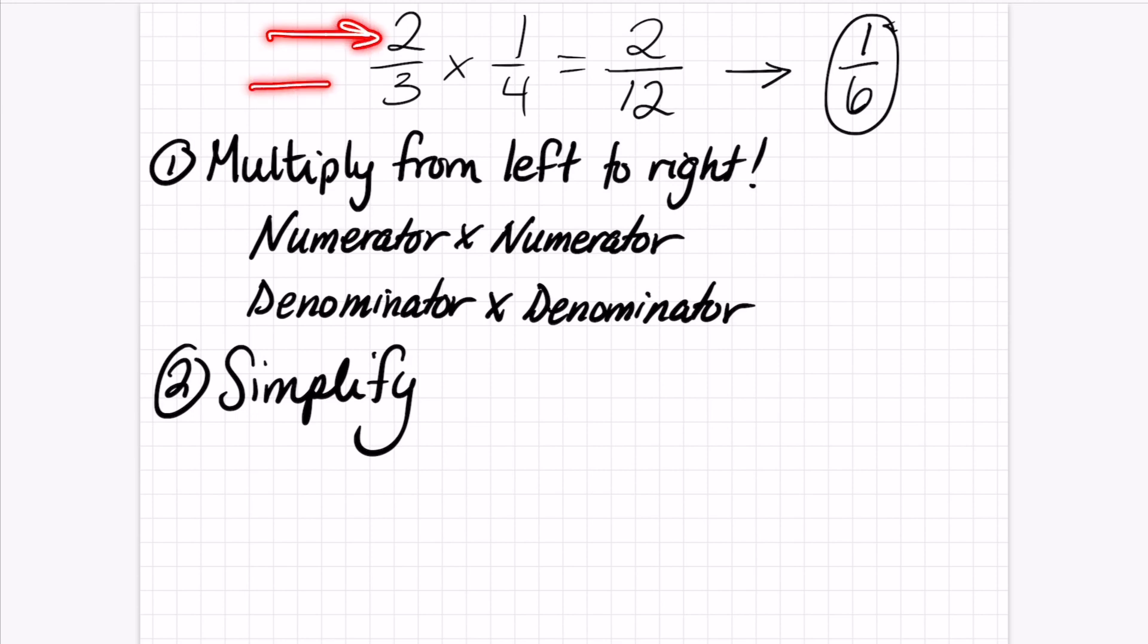So take a look at this example up here. All I'm doing is 2 times 2 to get 2, times 1 to get 2, and 3 times 4 to get 12. And I'm just getting 2 over 12 and 1 6. That's what I'm doing.